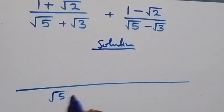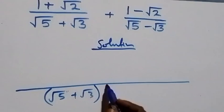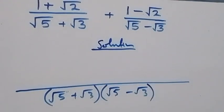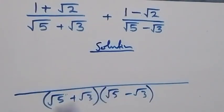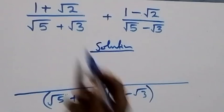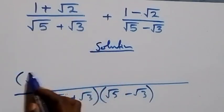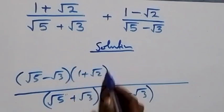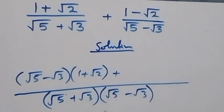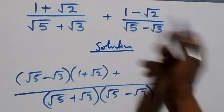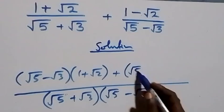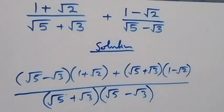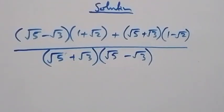The LCM is (√5 + √3)(√5 − √3). When (√5 + √3) goes into the LCM, the remaining factor is (√5 − √3), so we multiply (1 + √2) by (√5 − √3). Similarly, (√5 − √3) goes into the LCM leaving (√5 + √3), so we multiply (1 − √2) by (√5 + √3).